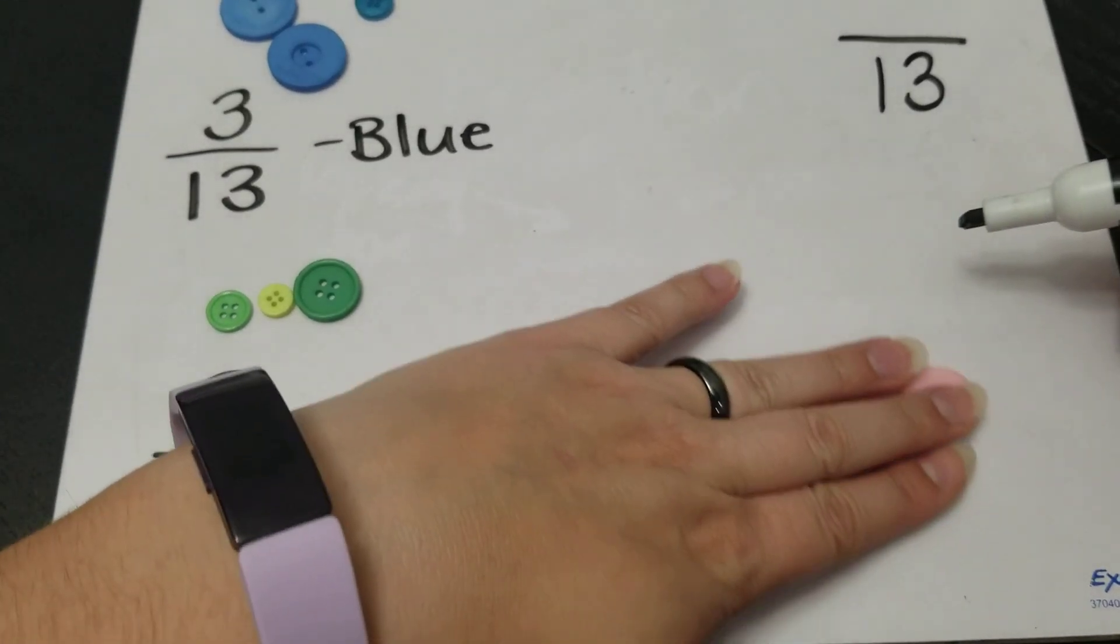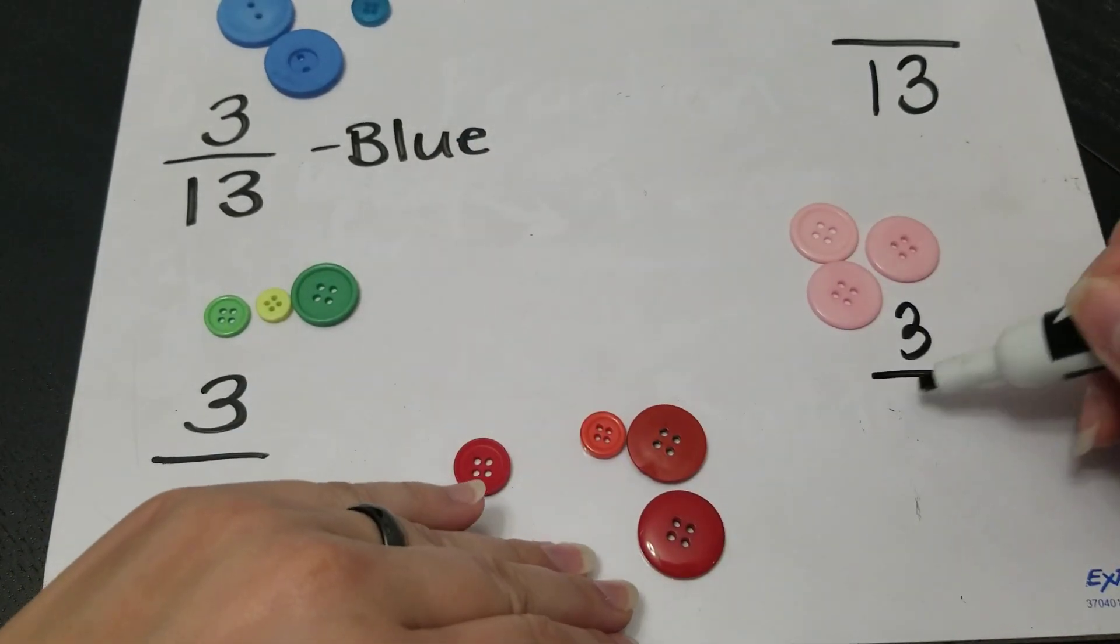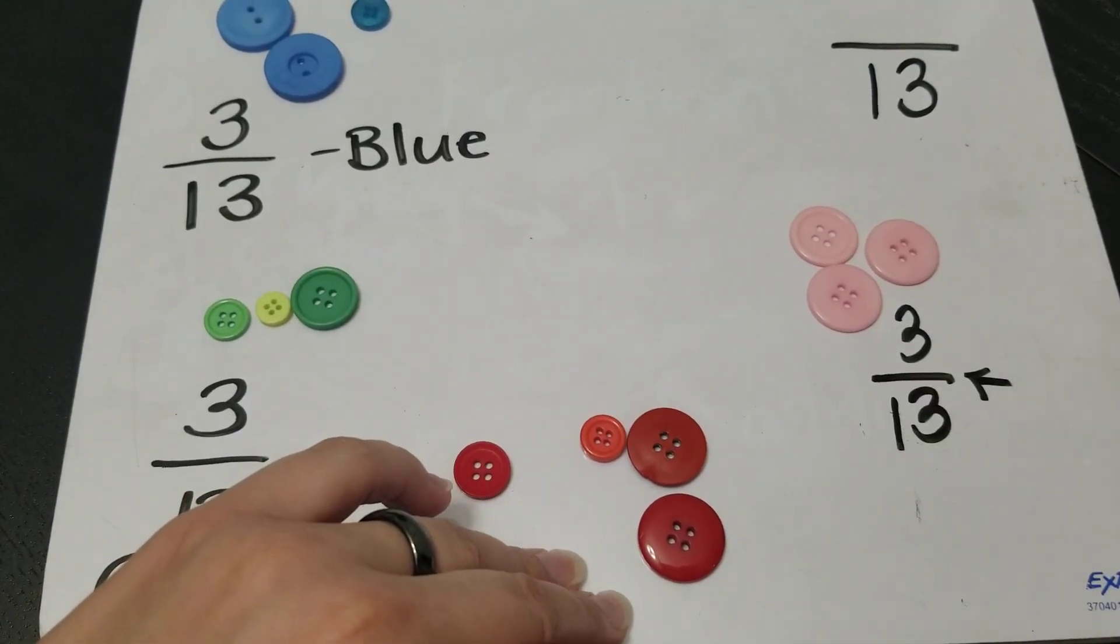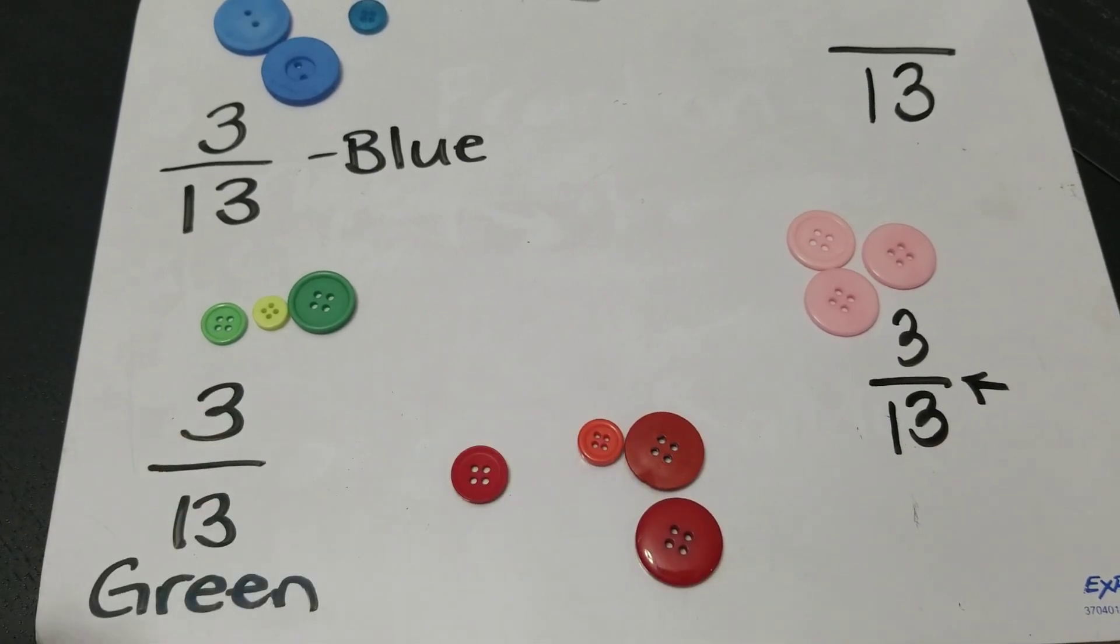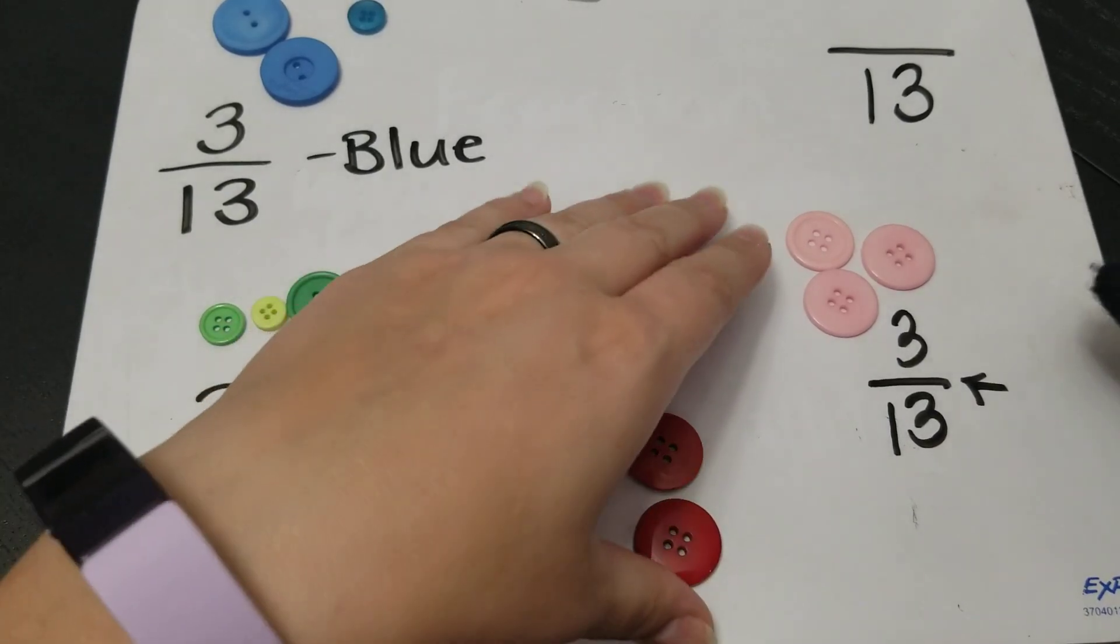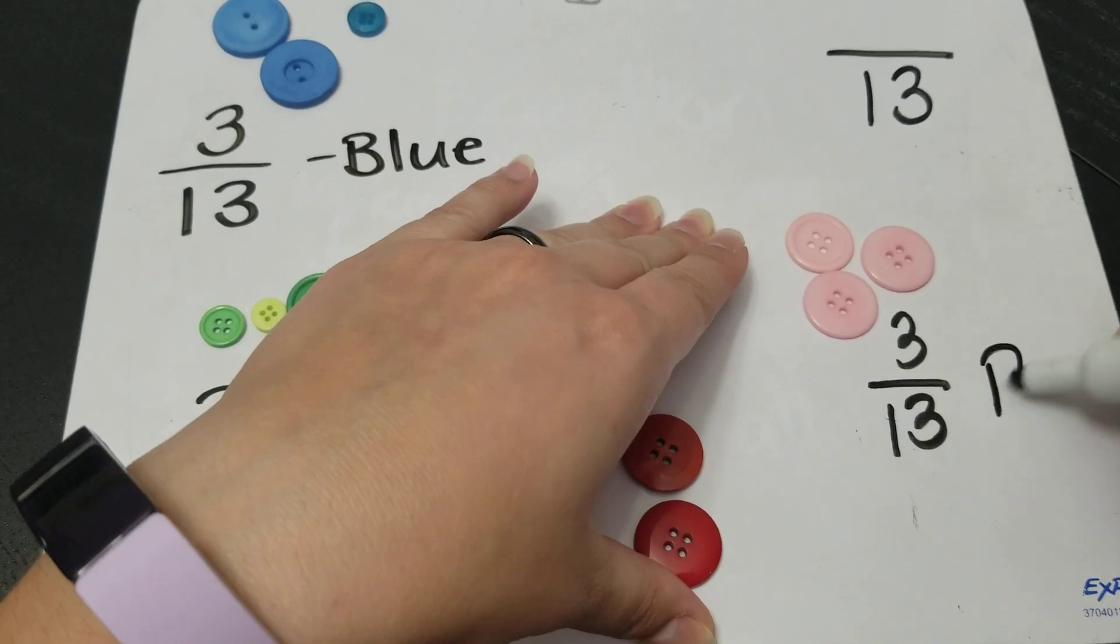Over here I have three out of my 13 buttons. This line is kind of like the out of line which means how many all together, right? Three out of my 13 buttons are pink.